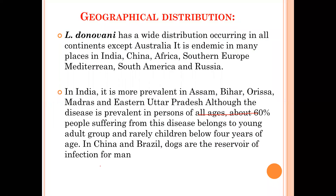Leishmania donovani is widely distributed in all continents except Australia. It is endemic in many places in India, China, Africa, Europe, etc. In India it is more prevalent in Assam, Bihar, Odisha, Madras, and Eastern UP. The disease is prevalent in persons of all ages, but about 60% of those suffering from it belong to the young adult group. Rarely, children under 4 years are affected.